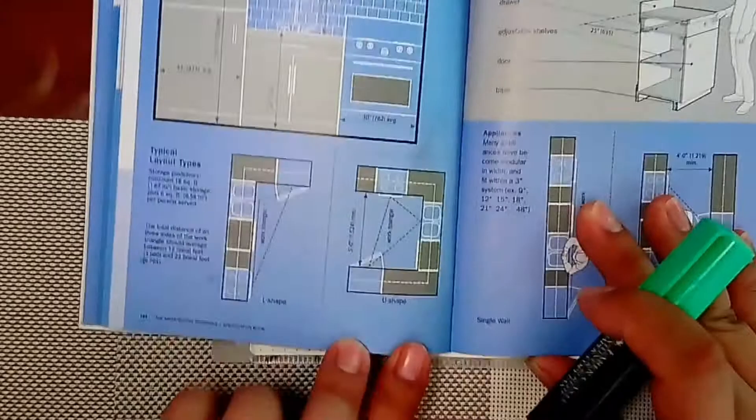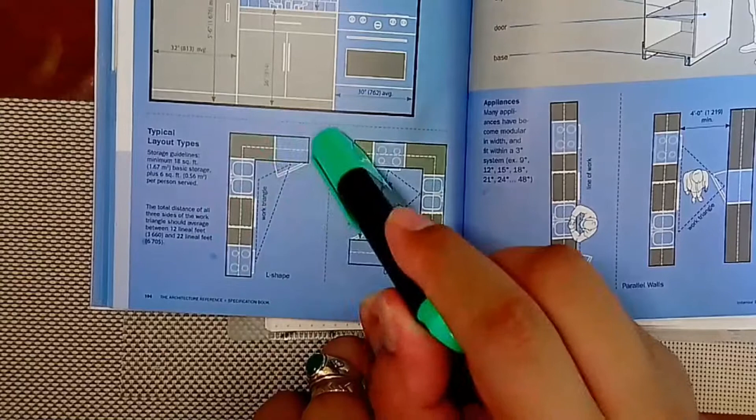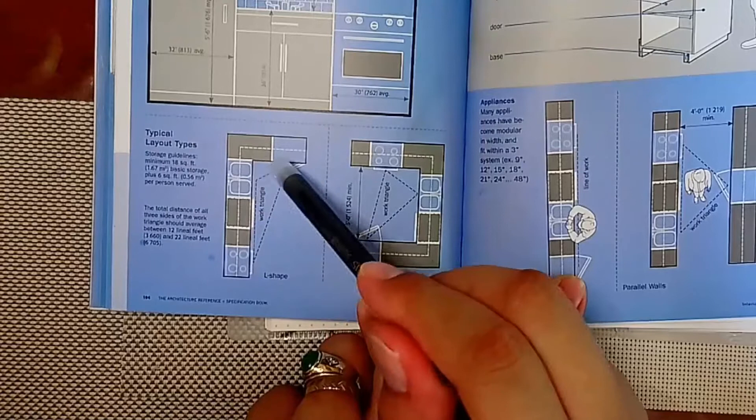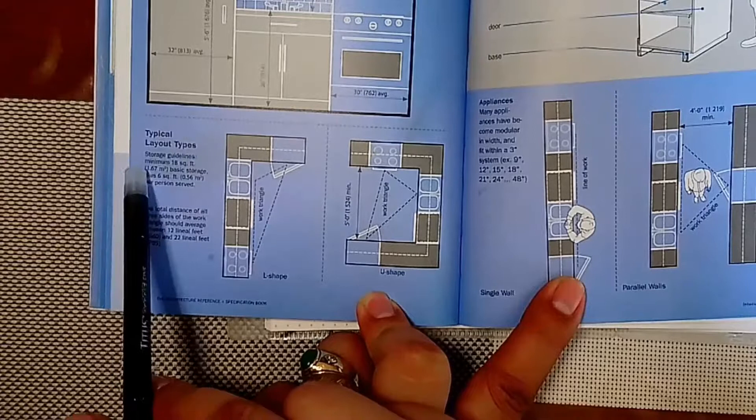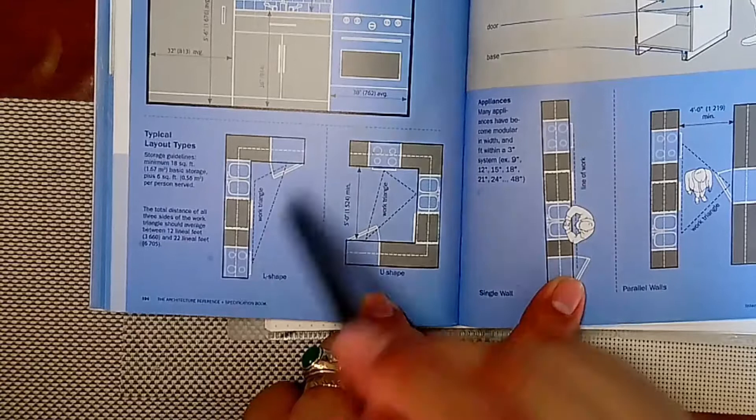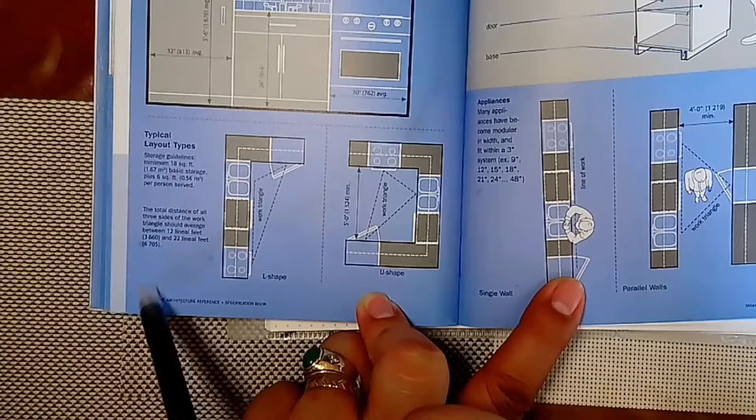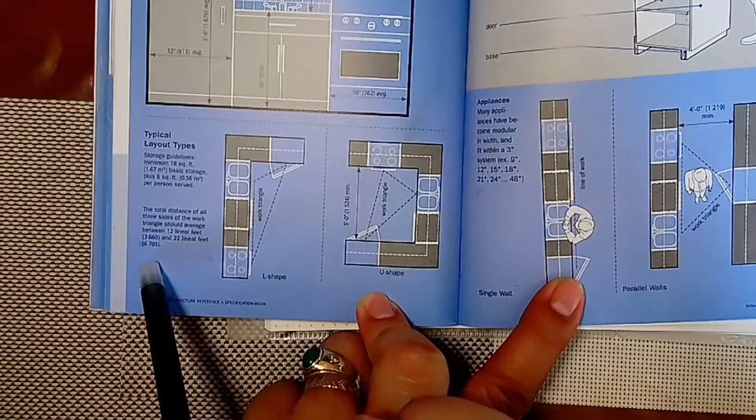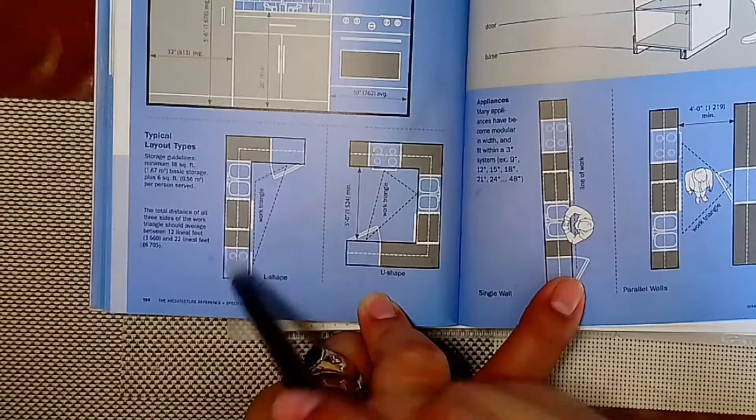Here are typical kitchen types. This shows the work triangle of the L-shaped kitchen. The storage guideline is a minimum of 18 square feet or 1.67 square meters basic storage plus 0.56 square meters per person served. The total distance of all three sides of the work triangle should average between 12 linear feet or 3.66 meters.